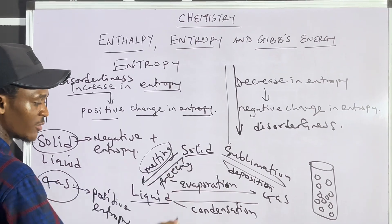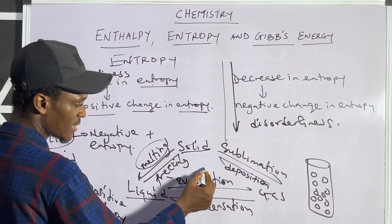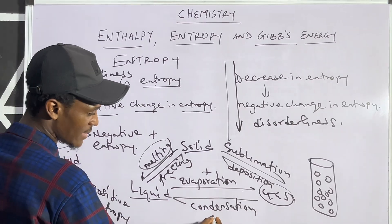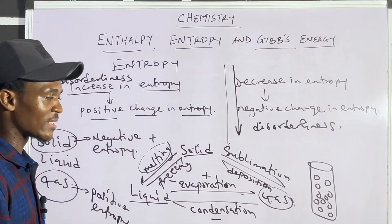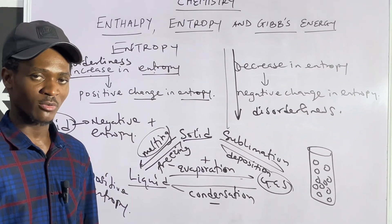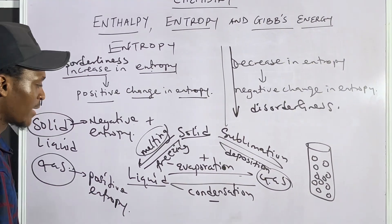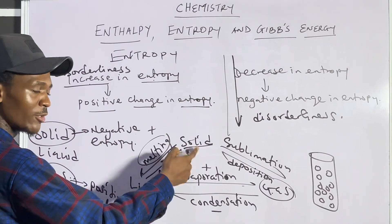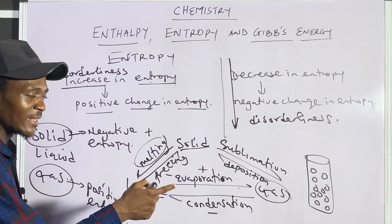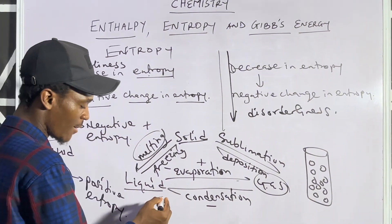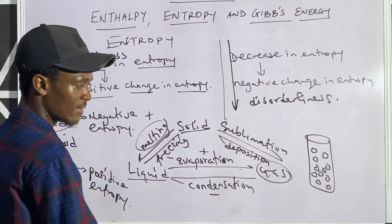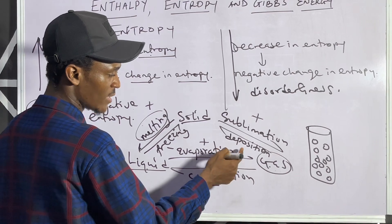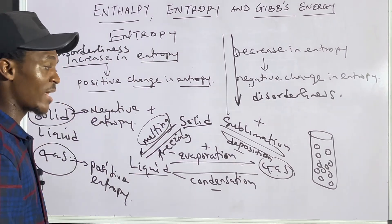What about liquid to gas? Positive entropy, because gases have more randomness than liquid. Then gas to liquid is negative — it's just the opposite. Anyone that involves the application of temperature will certainly be positive entropy. You need to apply heat on solid to obtain liquid, and applying heat on liquid gives you gas, and applying heat on solid gives you gas. So those are positive entropy while the reverses are negative entropy.